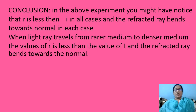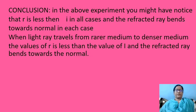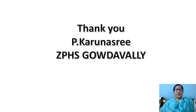What did you conclude from this activity? You will notice that R is less than I in all cases, and the refracted ray bends towards the normal in each case. When a light ray travels from a rarer medium to a denser medium — rarer medium being air and denser medium being the semicircular glass — the value of R is less than I and the refracted ray bends towards the normal. Children, write the precautions for this activity by yourself. Thank you.